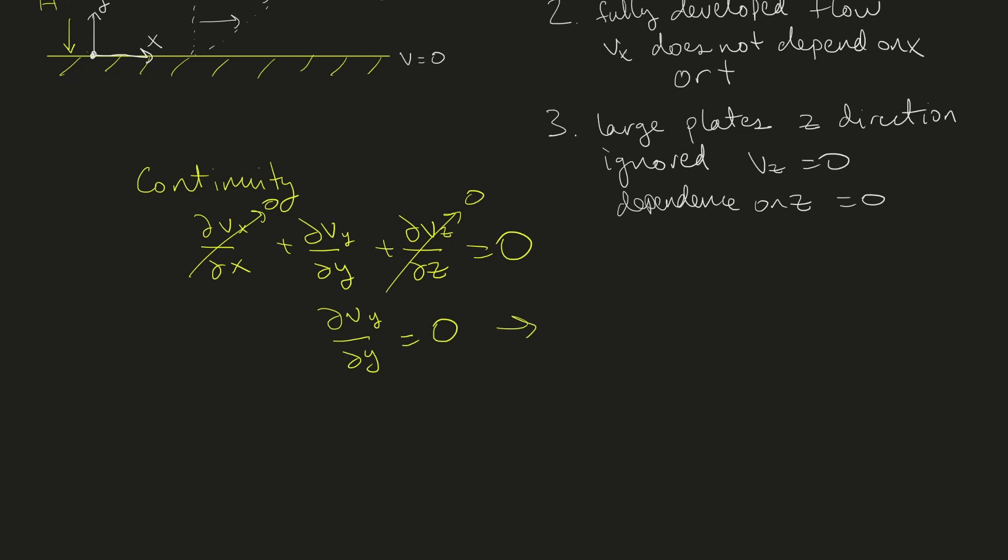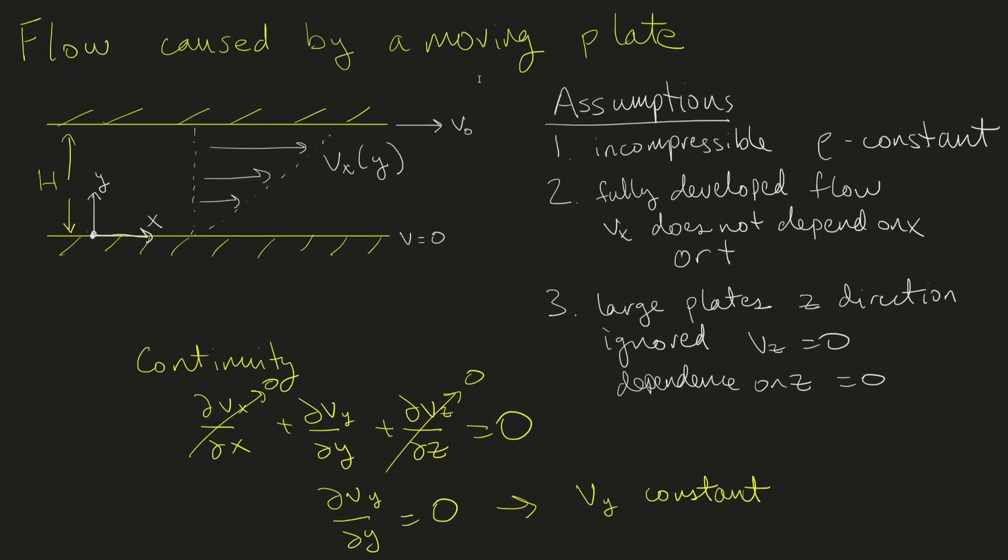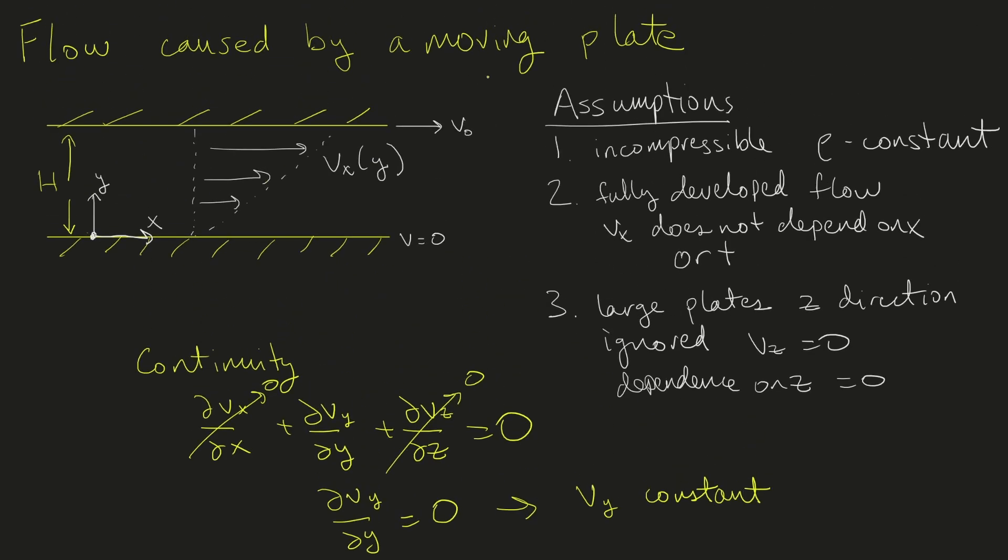This leaves us with ∂vy/∂y = 0, meaning vy is a constant. Since there can't be any flow through these walls, the velocity in the y direction must equal zero everywhere. This simplifies our problem significantly, allowing us to focus only on the x directional flow.